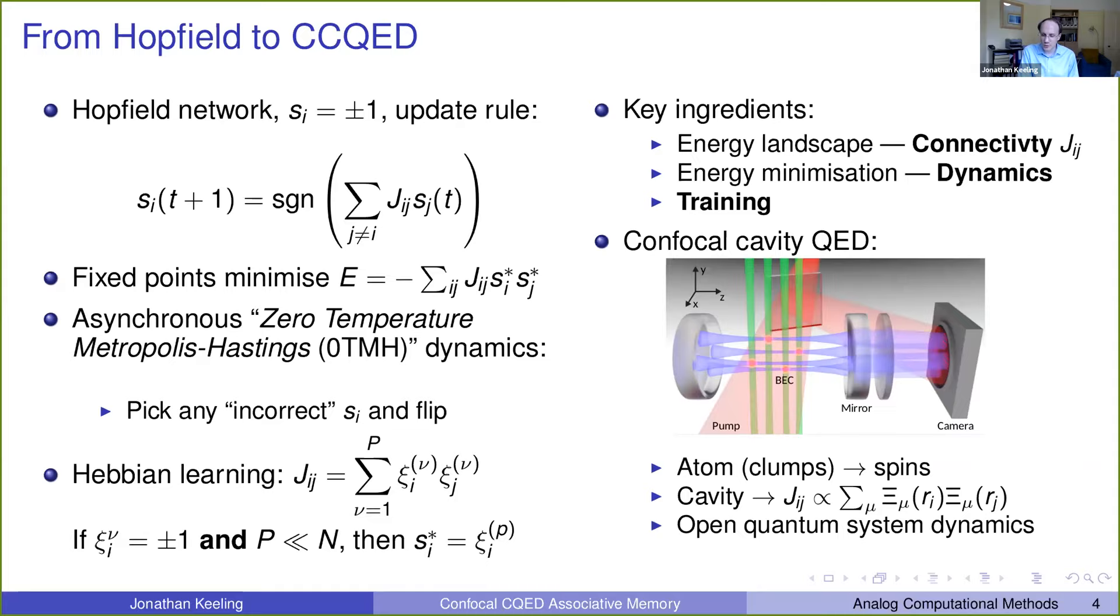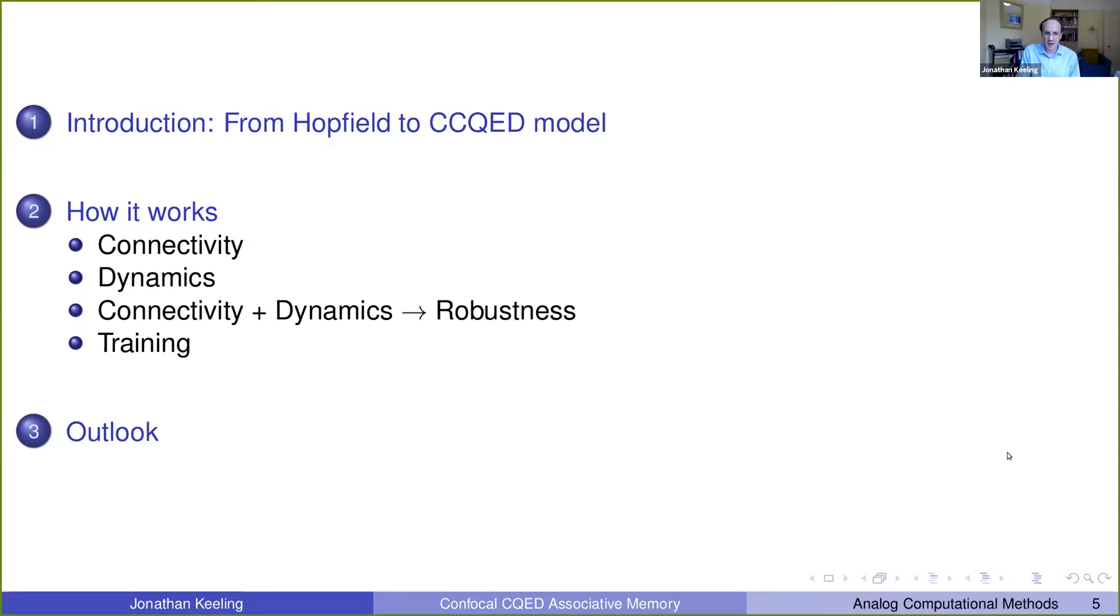And so, as has been described in some detail, what we want to do is to use atoms or clumps of atoms, and I'll explain why later we should consider clumps, to use those as the spins, as the S's, to use the cavity to induce the connectivity, and to use the open quantum system dynamics to give the dynamics, and I'll defer training to what I say at the end. So the outline of what I will say in the rest of this talk is to talk first about connectivity, then about dynamics, then put those two together and talk about robustness to fixed points, and then finally talk about training, and then right at the end to discuss a bit more about the outlook in terms of going beyond the semi-classical description that I'll mostly be focused on.